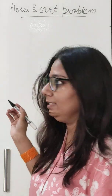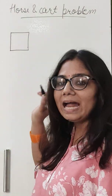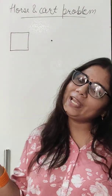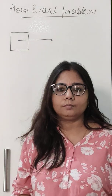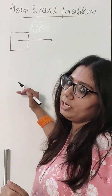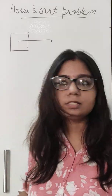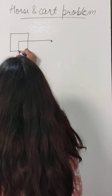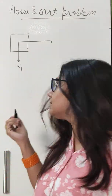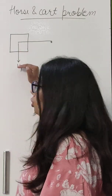Let me show you diagrammatically. Let us suppose I am showing a cart, and I am representing the horse by a dot. I am connecting the horse and cart together. This cart is applying force on the ground in the downward direction — equal to its weight. So this cart is applying force on the ground equal to its weight, and this weight is acting vertically downwards. The ground is experiencing a force due to the cart.